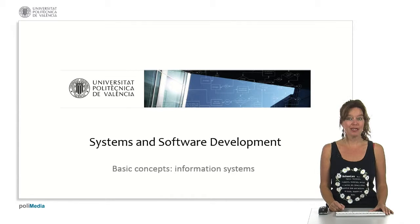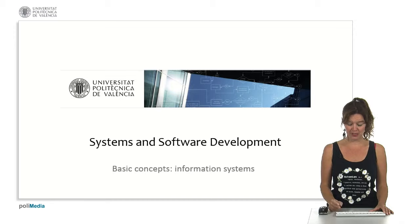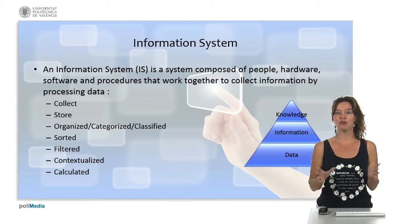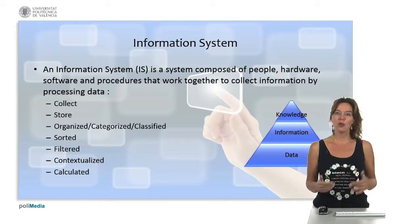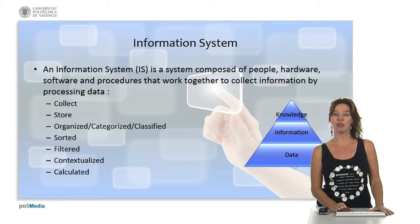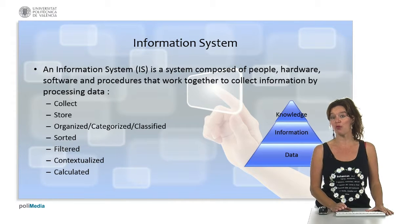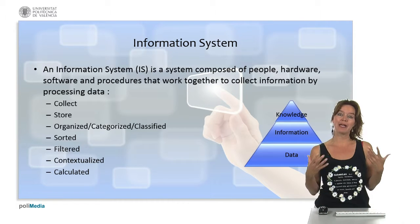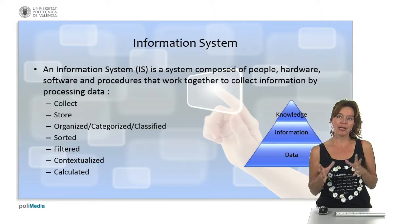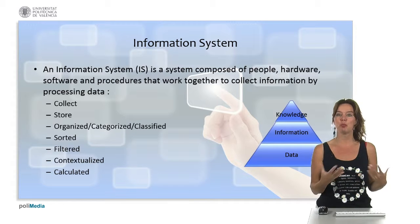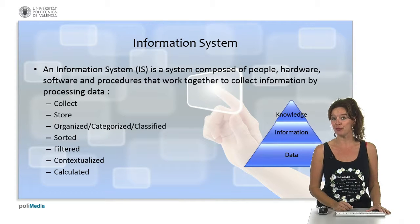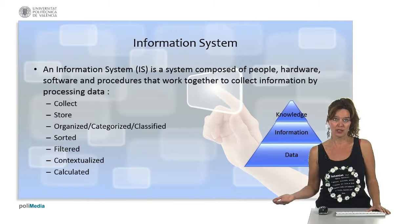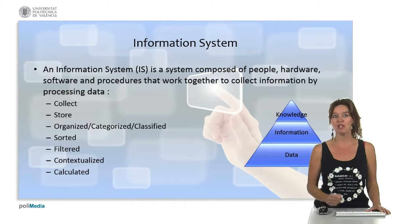Let's continue and see what is an information system. In the previous video we have seen data, information and knowledge. An information system is a computerized system composed of people, hardware, software and procedures that work together to collect and store data and process it in such a way that we get information that we can use to take decisions and create knowledge.